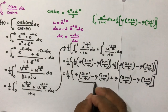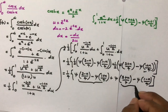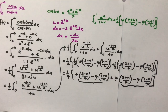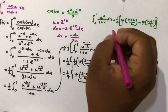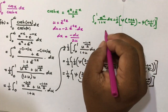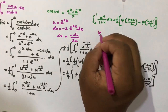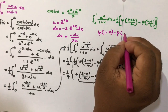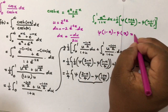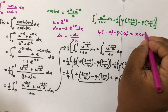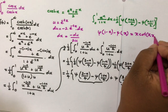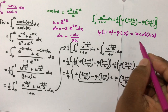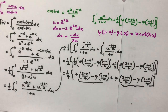We now apply the reflection formula for the digamma function: digamma(1-x) - digamma(x) = π·cot(πx). This will allow us to simplify the paired digamma differences.